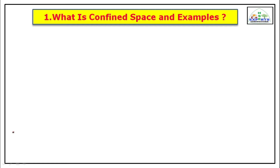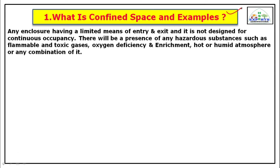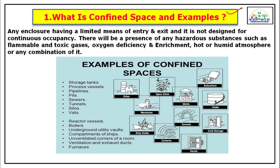What is a confined space and examples of confined space? Any enclosure having a limited means of entry and exit that is not designed for continuous occupancy. There will be a presence of hazardous substances such as flammable and toxic gases, oxygen deficiency and enrichment, hot or humid atmosphere, or any combination of these. Examples include storage tanks, process vessels, pipelines, pits, sewers, tunnels, silos, vats, reactor vessels, boilers, underground utilities, vaults, compartments of ships, unventilated corners of a room, and ventilation and exhaust ducts.